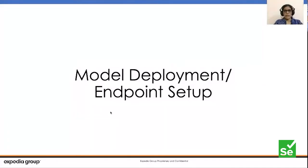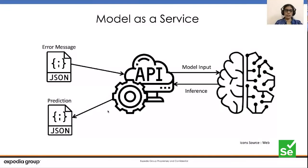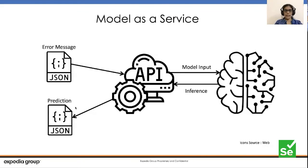We want our trained model to be exposed as a service via an API endpoint, where the error message could be given as input and the endpoint talks to the deployed model to get back the inference or prediction and send it back as an API response. We want to expose the model as a service for simplicity of usage, since the model can be invoked to get the prediction from any piece of code. The primary technology we used to train and deploy it is SageMaker.